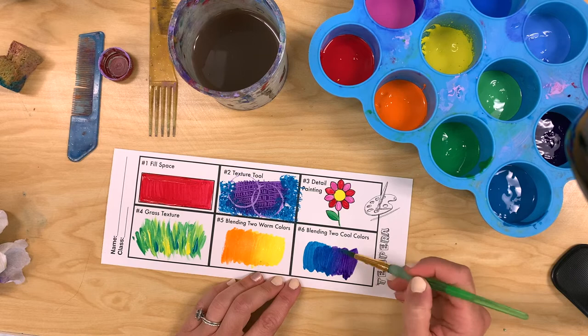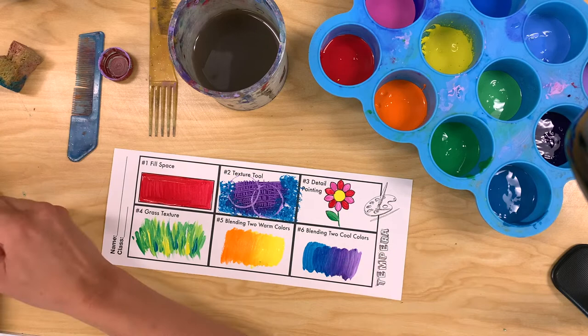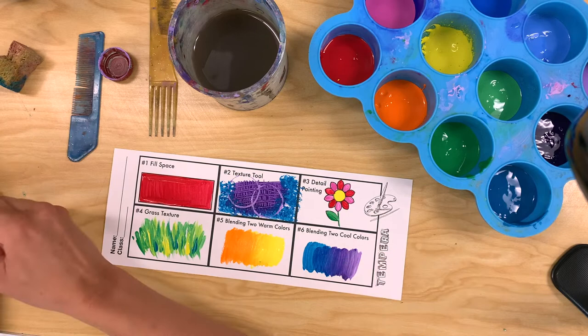So choose two of those colors to blend from one into the other just like we did with our warm colors. Remember only use a small amount of paint and you want to put down one of the colors then the other and with a clean brush blend them in the middle.